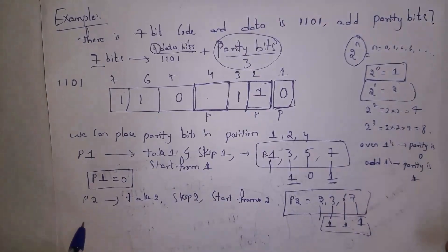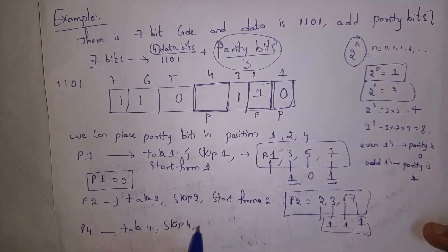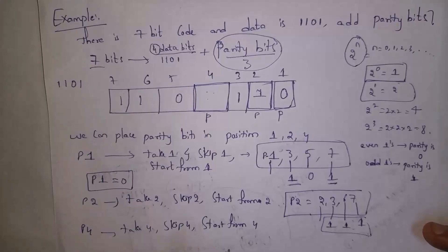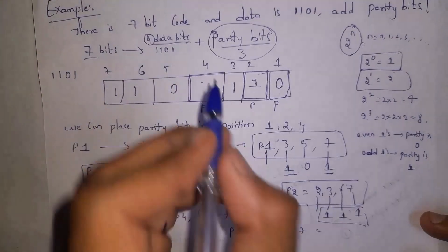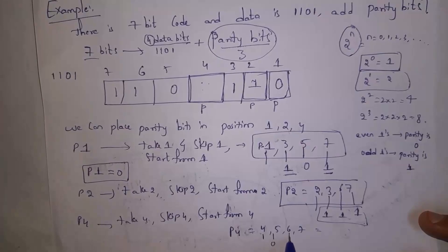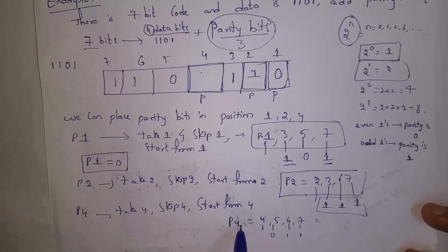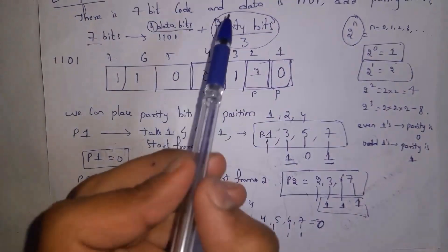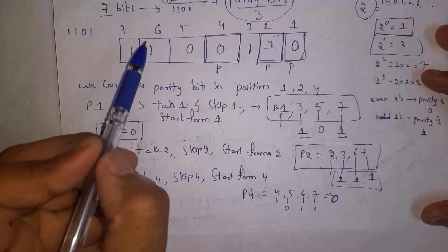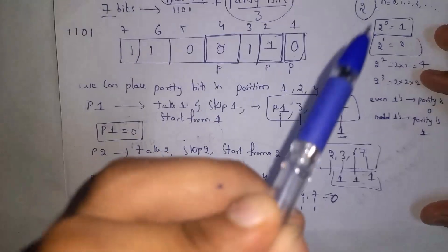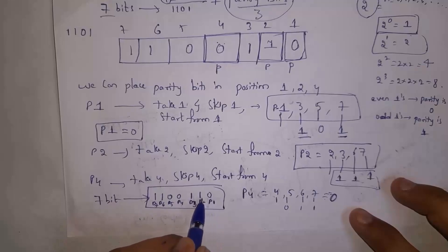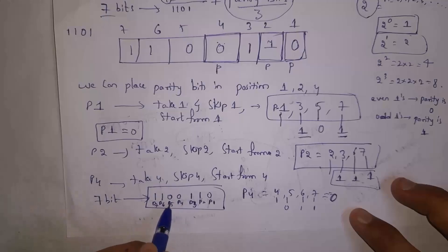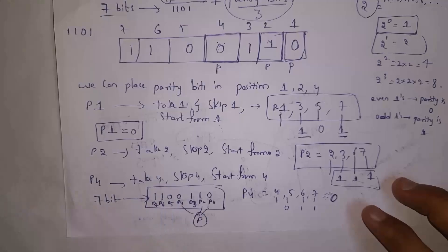To find P4: take 4, skip 4, starting from position 4. So we take positions 4, 5, 6, 7. Position 5 = 0, position 6 = 1, position 7 = 1. There are two 1s (even number), so P4 = 0. We now have all three parity bits: P1 = 0, P2 = 1, P4 = 0. These parity bits are added to the data. This is how Hamming code finds parity bits when data bits are given.